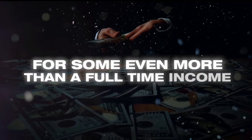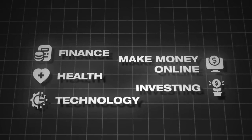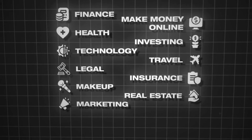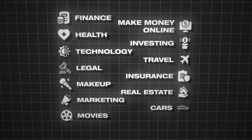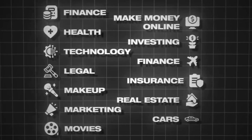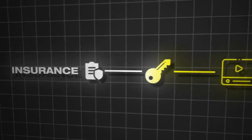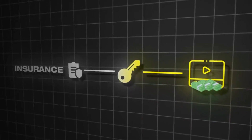For some, that can be more than a full-time income. You might be wondering what topics have higher CPMs. These can include finance, make money online, health, investing, technology, travel, legal, insurance, makeup, real estate, marketing, cars, and movies. Most of the ads you've seen on YouTube are within one of these categories because the lion's share of ad revenue being spent on YouTube is concentrated here. So if your videos have keywords relating to these topics and are actually about these topics, you will get a much higher CPM on average.